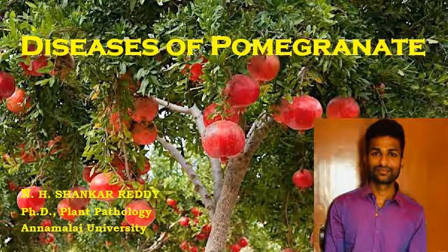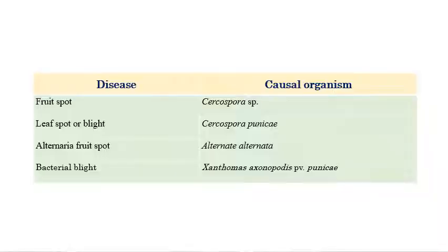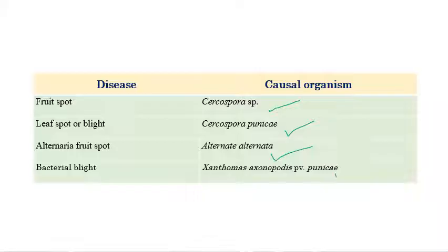Diseases of Pomegranate. My name is N.H. Shankar Reddy and I am doing PhD in Plant Pathology at Annamalai University. These are the important diseases in Pomegranate: fruit rot caused by Cercospora species; leaf spot or blight caused by Cercospora punicae; Alternaria fruit rot caused by Alternaria alternata; and bacterial blight caused by Xanthomonas axonopodis pathovar punicae.